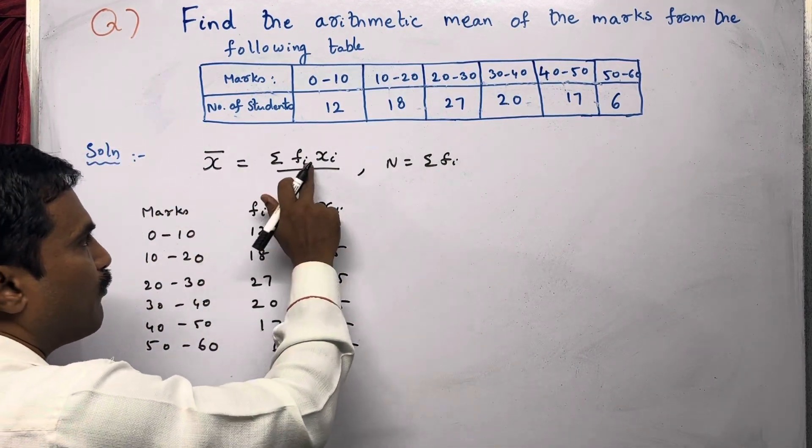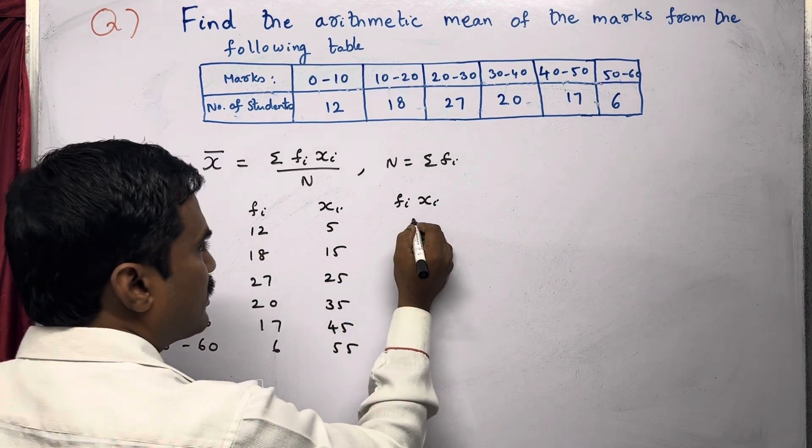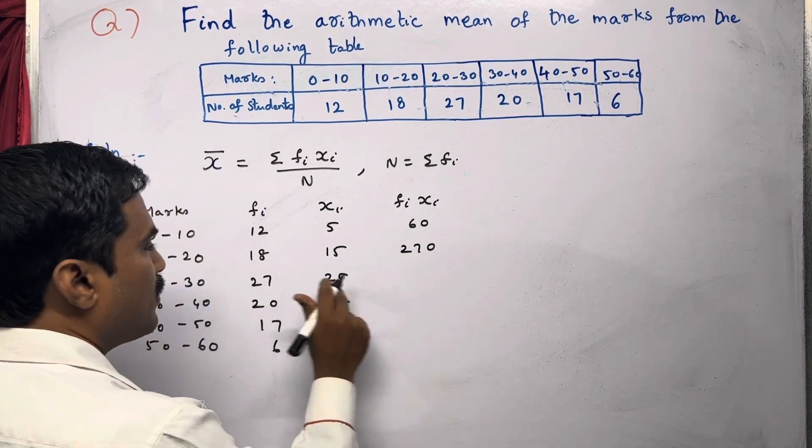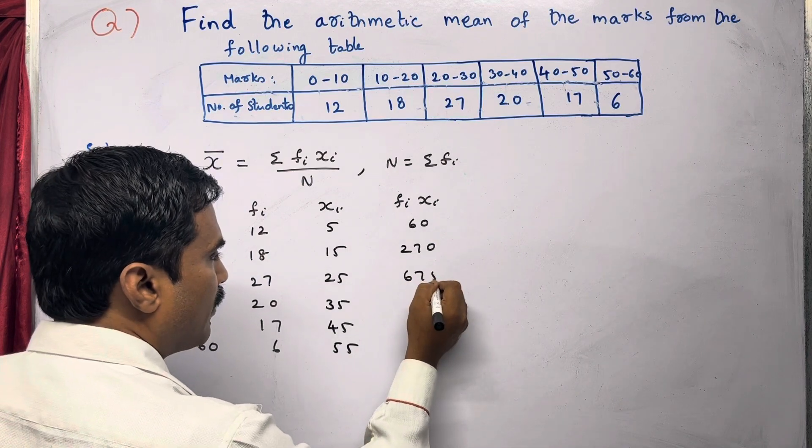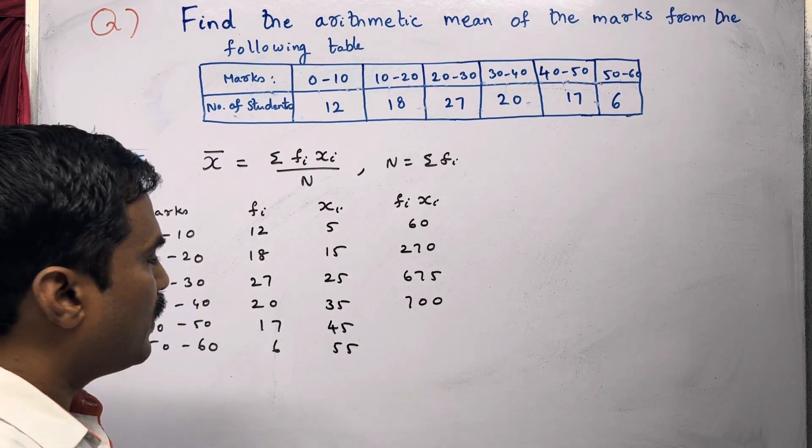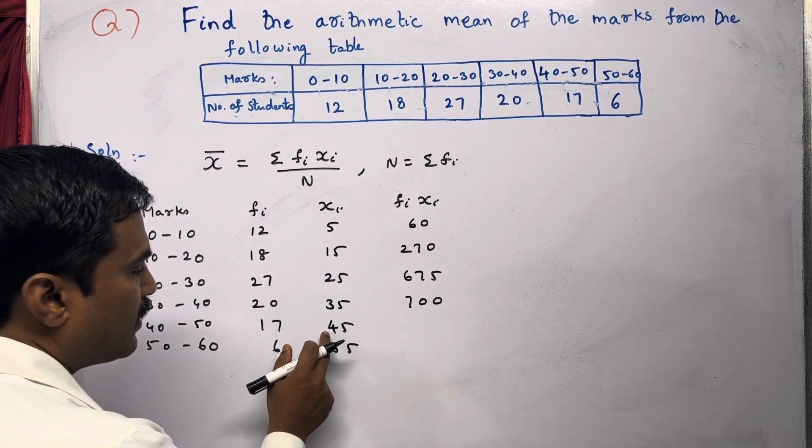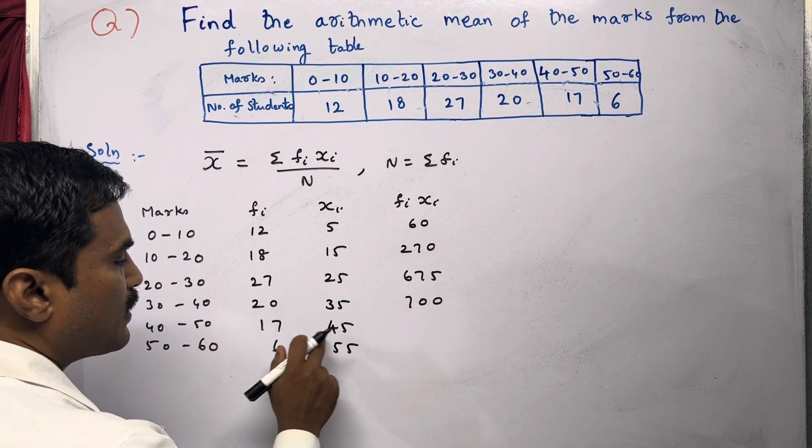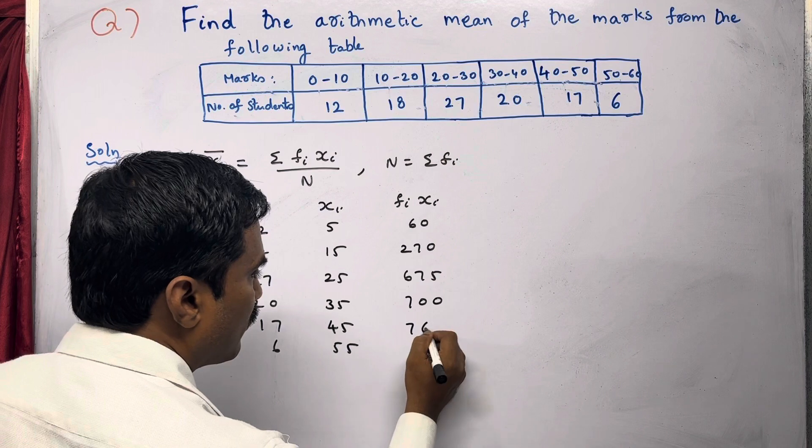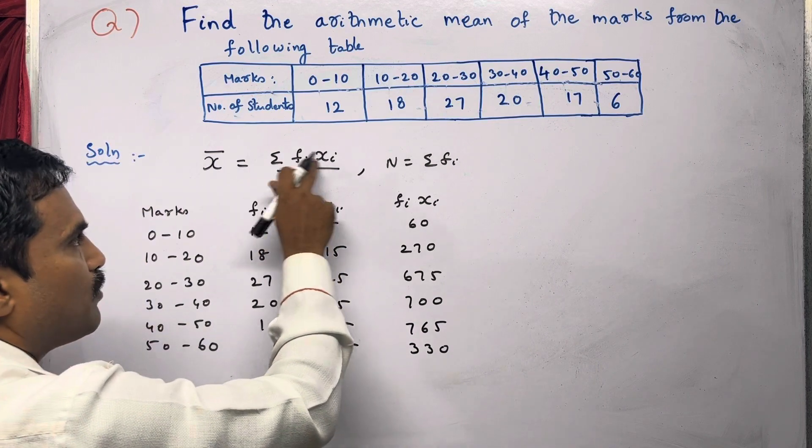Now we need to get Fi × Xi. Multiply: 12 × 5 = 60; 18 × 15 = 270; 27 × 25 = 675; 20 × 35 = 700; 17 × 45 = 765; and 6 × 55 = 330.